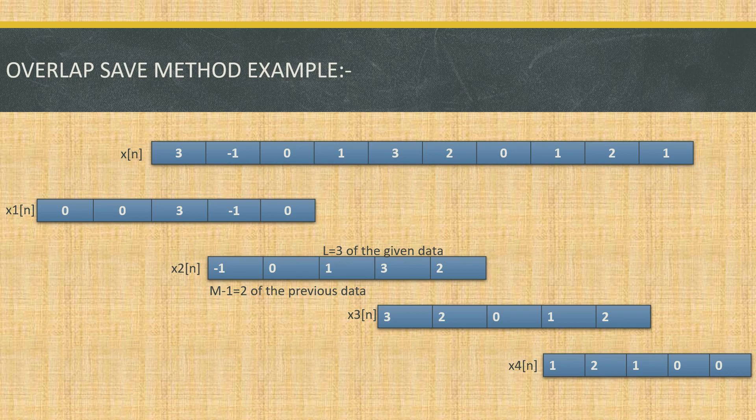The next step is discarding the M-1 points of each block. For x(n), the M-1 points of the first record are set to zero. Since M = 3, M-1 = 2, the first two elements of x1(n) are zero and the remaining are taken from the input sequence. For x2(n), the M-1 points are taken from the previous data — the last two elements of x1(n), which are -1 and 0, become the first two elements of x2(n), and the remaining three (L = 3) are taken from the input data. We do similarly for x3(n) and x4(n).